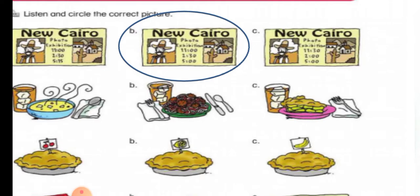Number two. Hello. Are you ready to order? I think so. I will have a bowl of chicken soup. I'm sorry, we don't have chicken soup today. We have garlic soup. Oh, I don't like garlic. What's today's special? Spaghetti and meatballs. Sounds good. I will have spaghetti and orange juice. Okay, spaghetti and meatballs and a glass of orange juice. I'll be right back. The answer is B.